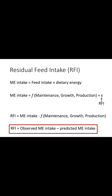If we rewrite the equation, RFI equals metabolizable energy intake minus the sum of maintenance requirement, growth requirement, and production requirement. The actual ME intake is the observed ME intake, while the function of maintenance, growth, and production is the predicted metabolizable energy intake, which can be calculated using non-linear mixed models — for example, in SAS software. So RFI is the difference between observed MEI and predicted MEI.